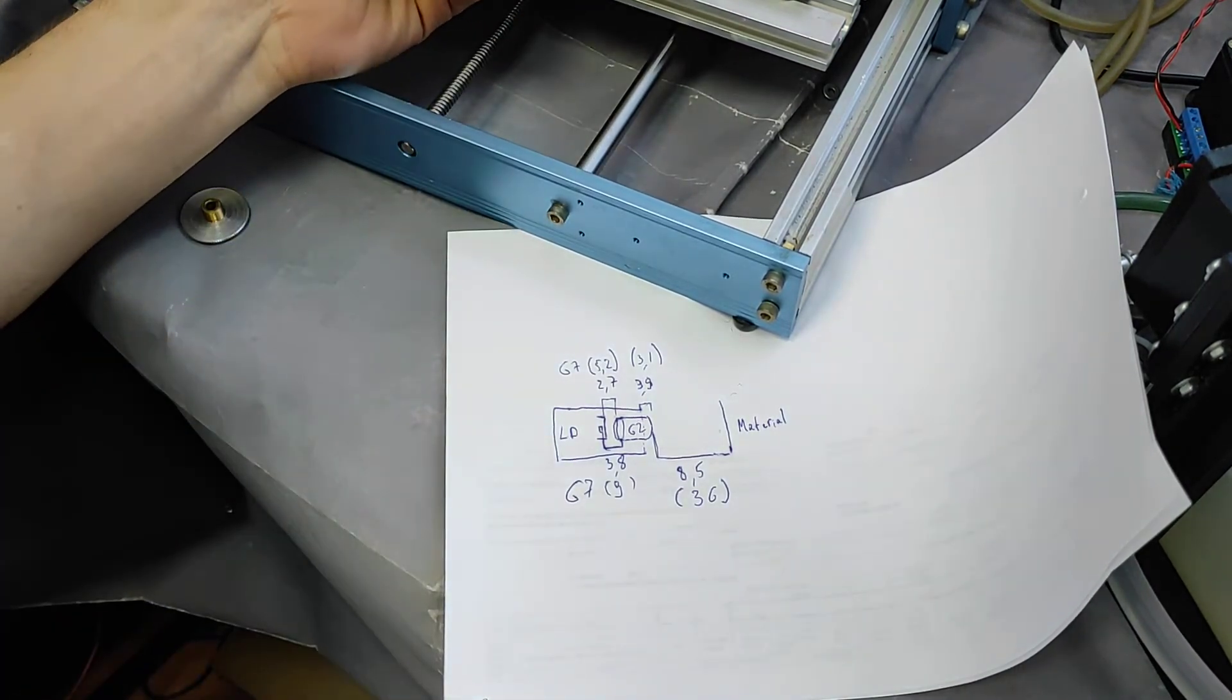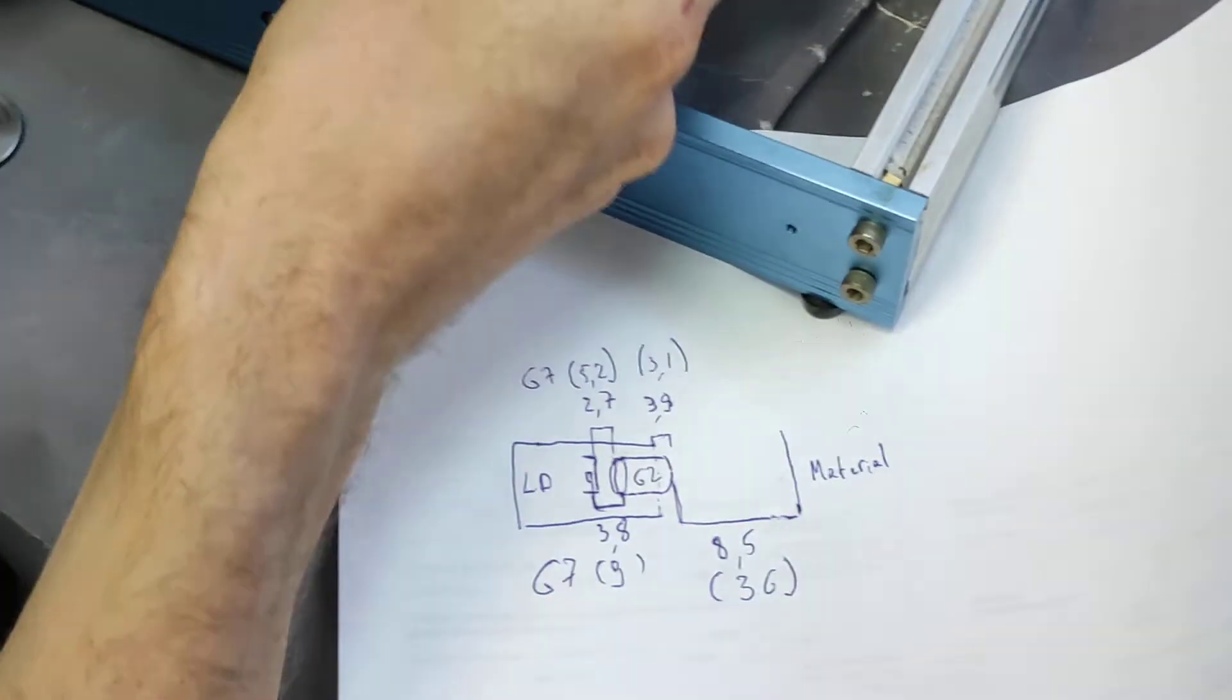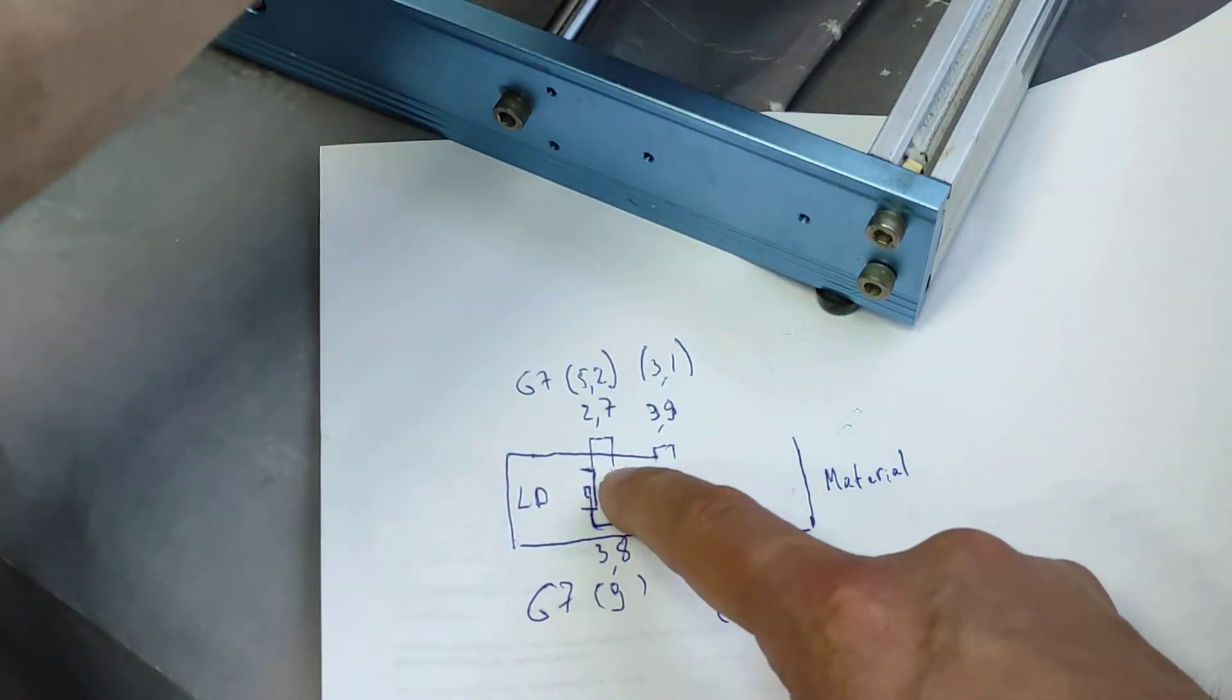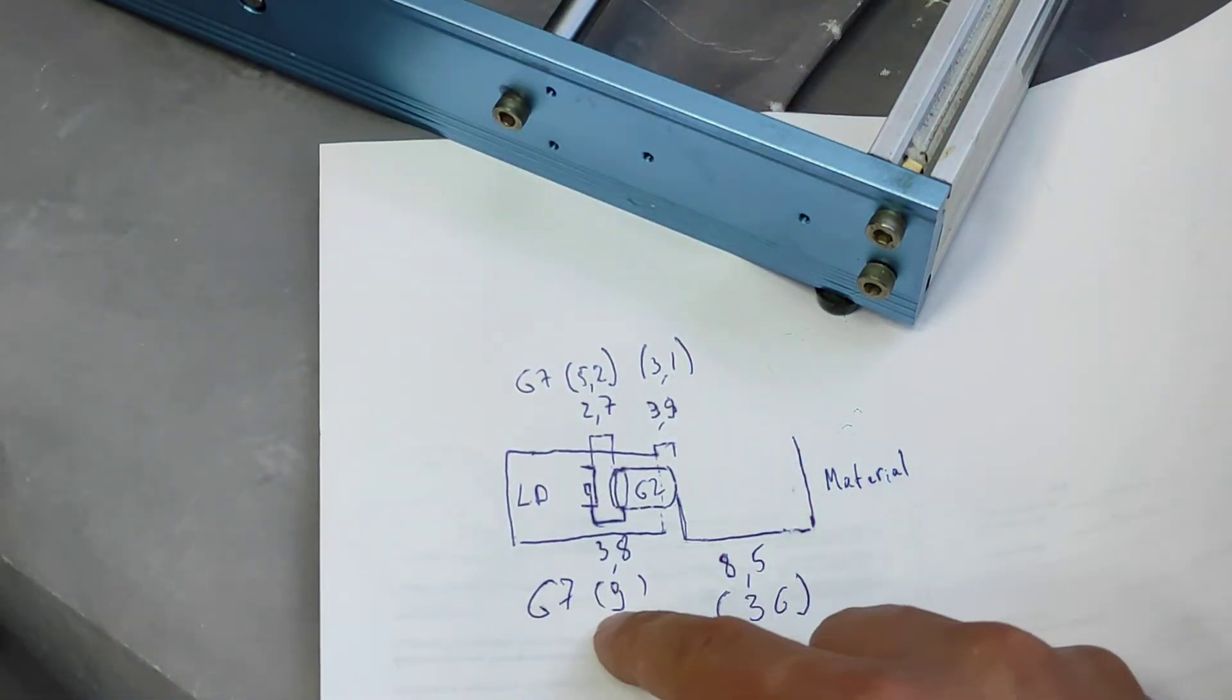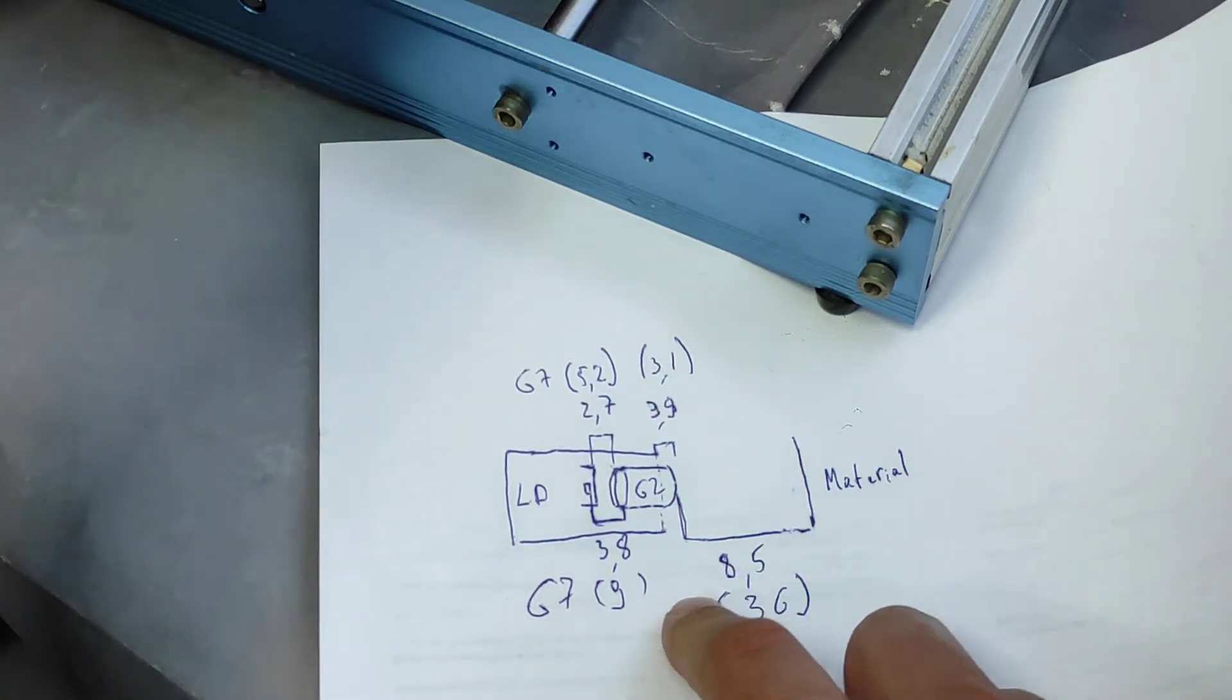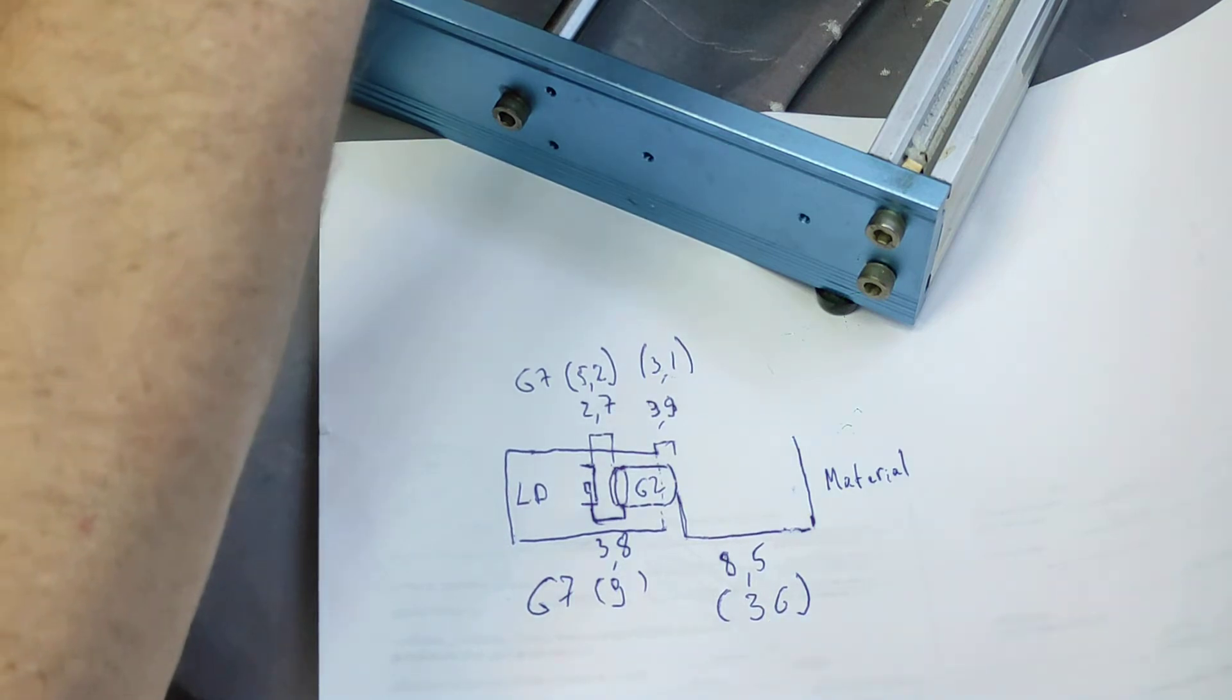You can see what parameters we have here for G7. The range from the laser diode cap to the lens tube is 5.2 millimeters. The range from here is 9 millimeters. The range from the focusing lens, from the end of the barrel of the diode out, is 3.1. And the range from the end of the lens to surface is 38 millimeters.